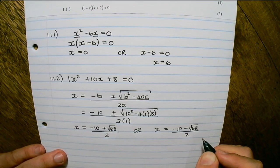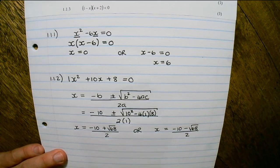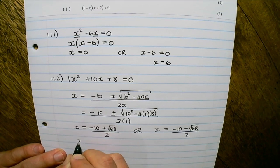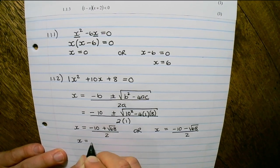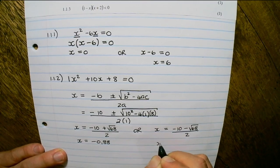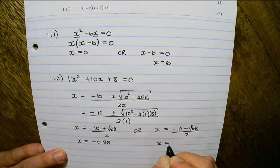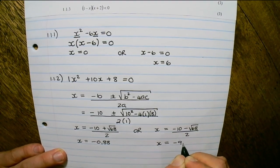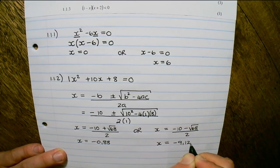But remember the question said correct to two decimal places. So x would be equal to negative 0.88 or x would be equal to negative 9.12.